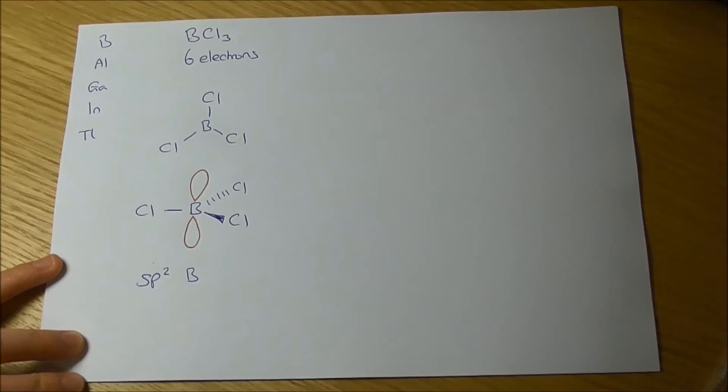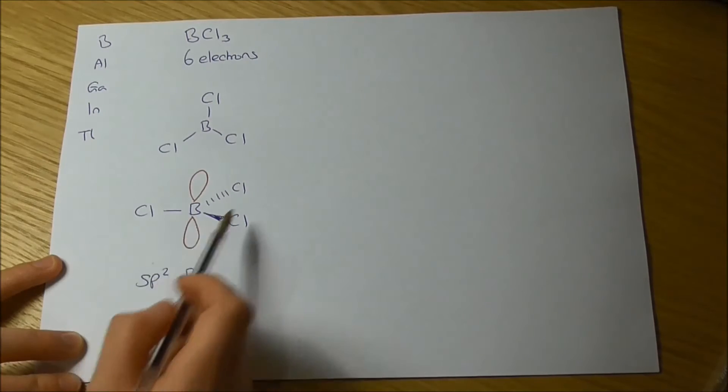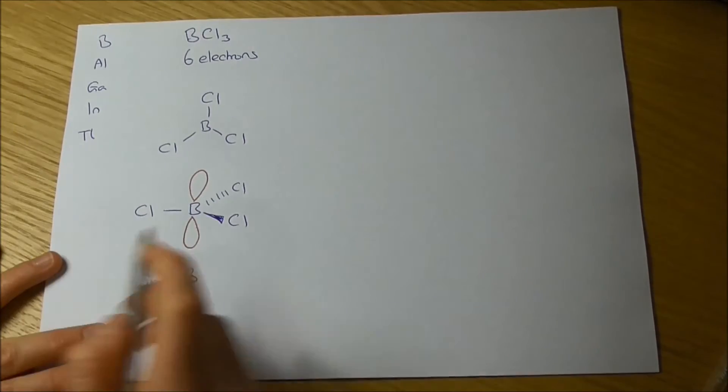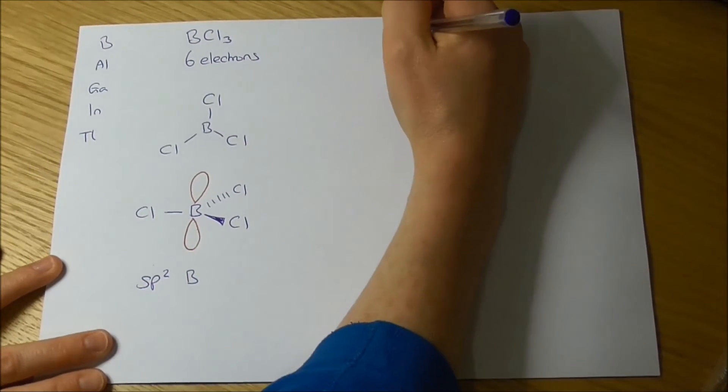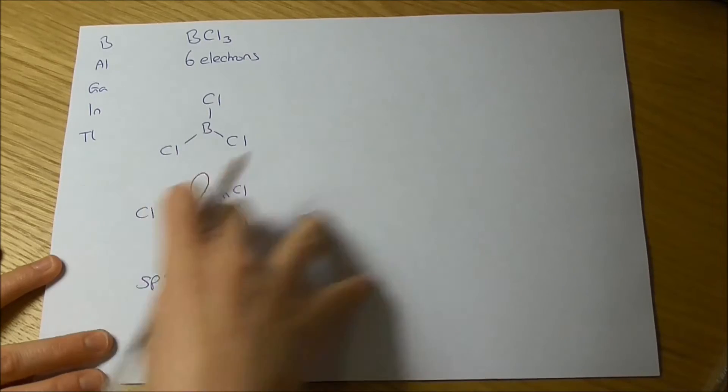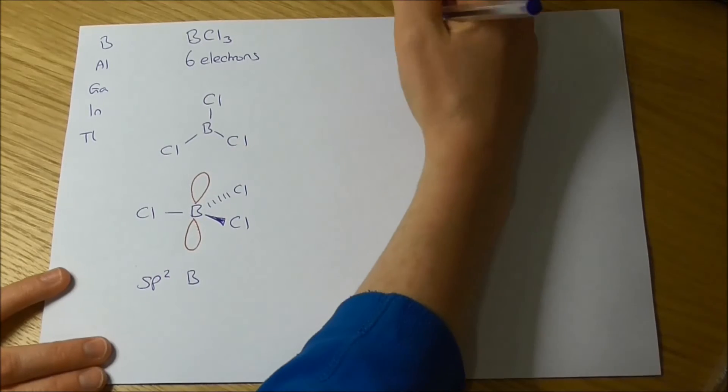So all the other elements in group 13 form electron deficient halides. Boron trichloride is this monomer form, but the other elements in group 13 actually dimerize in order to stabilize this electron deficiency.